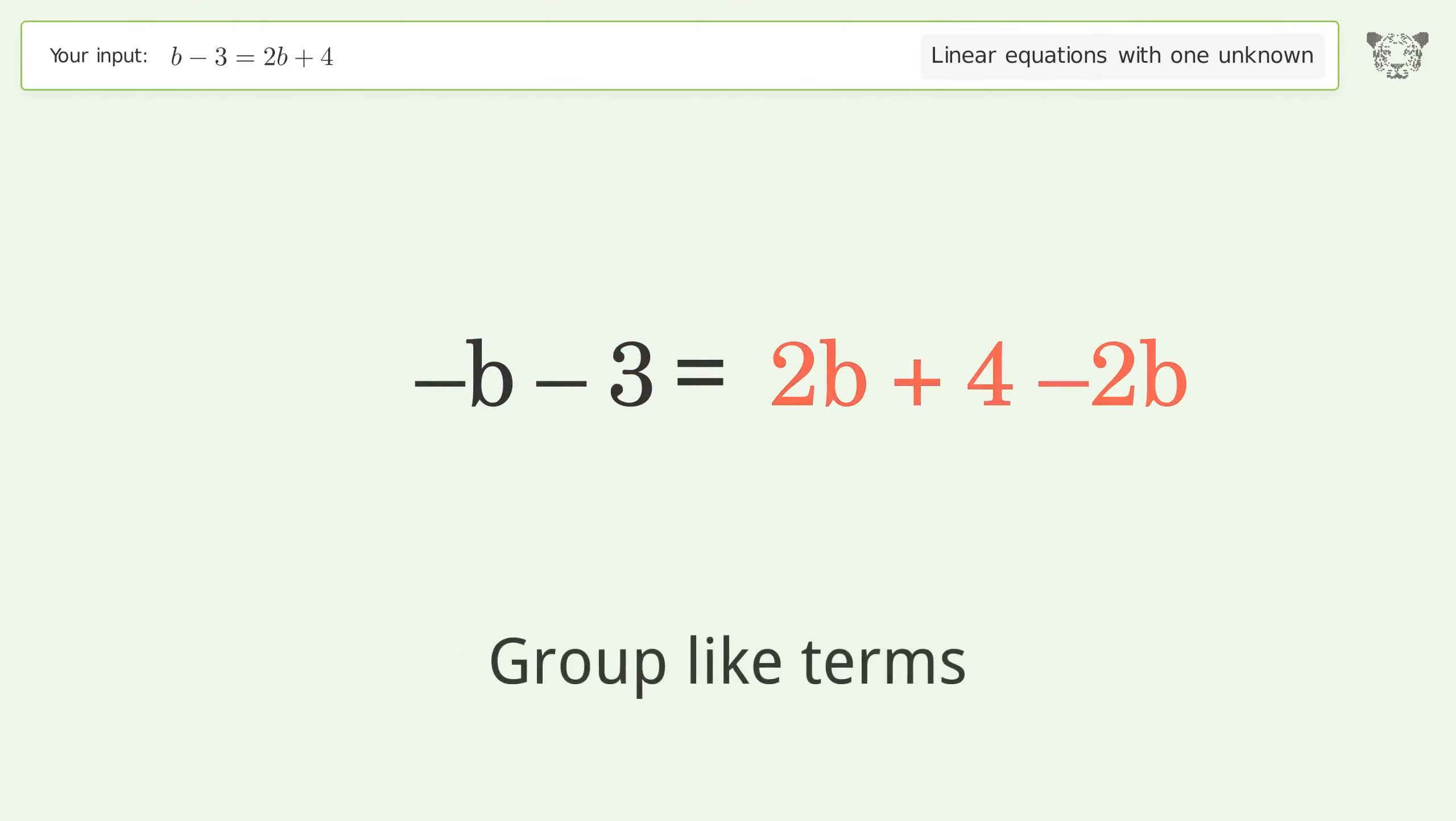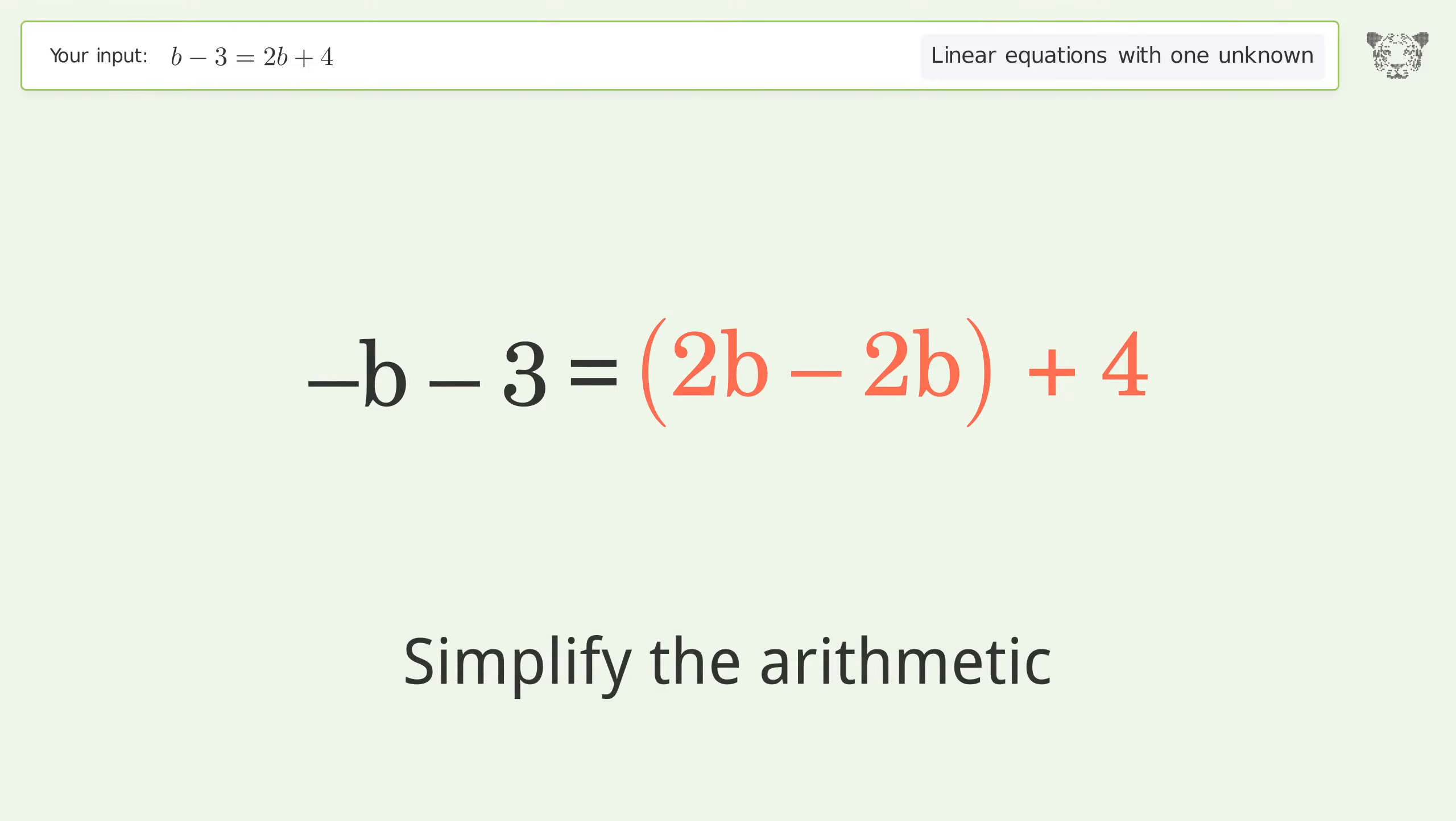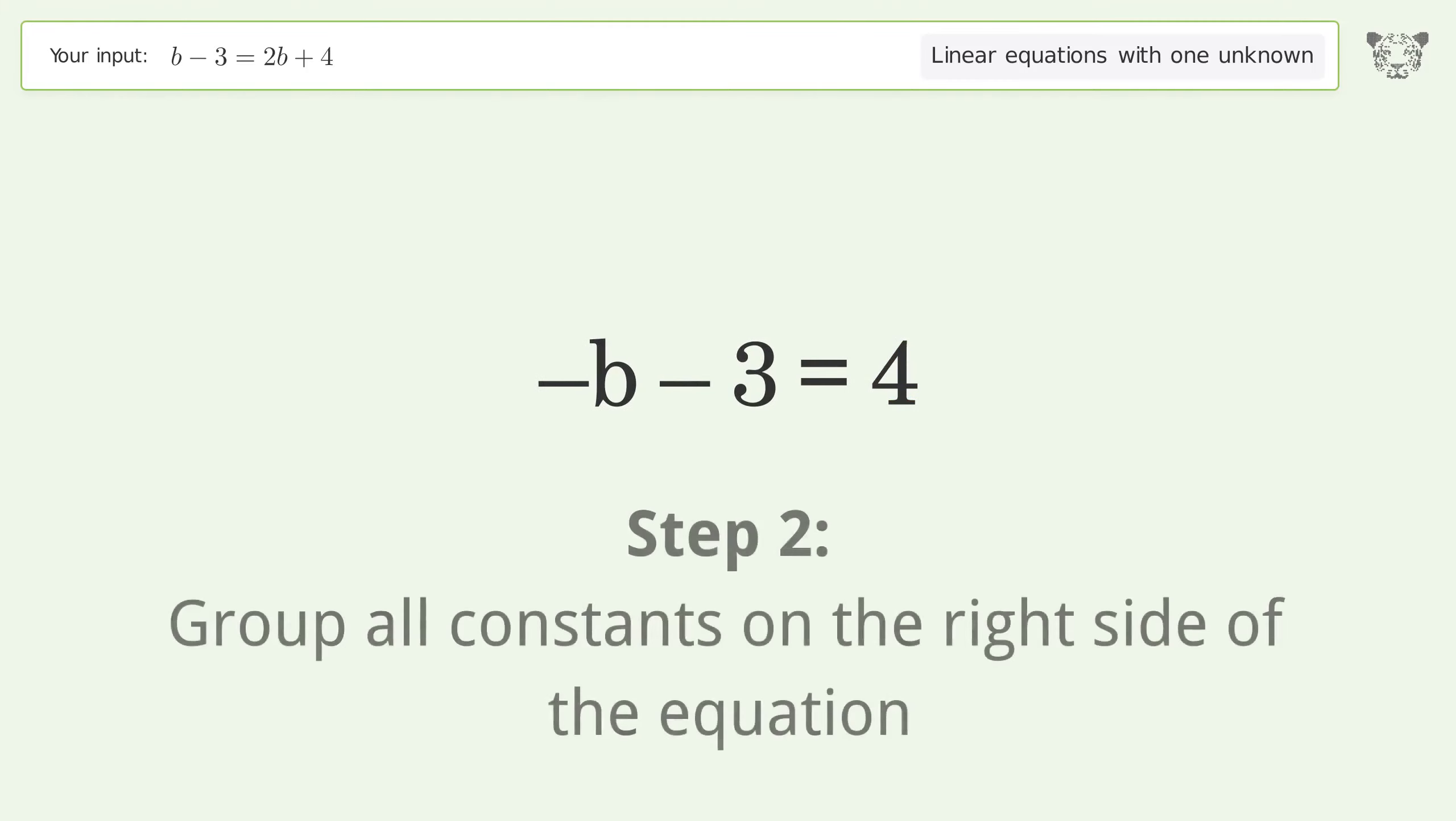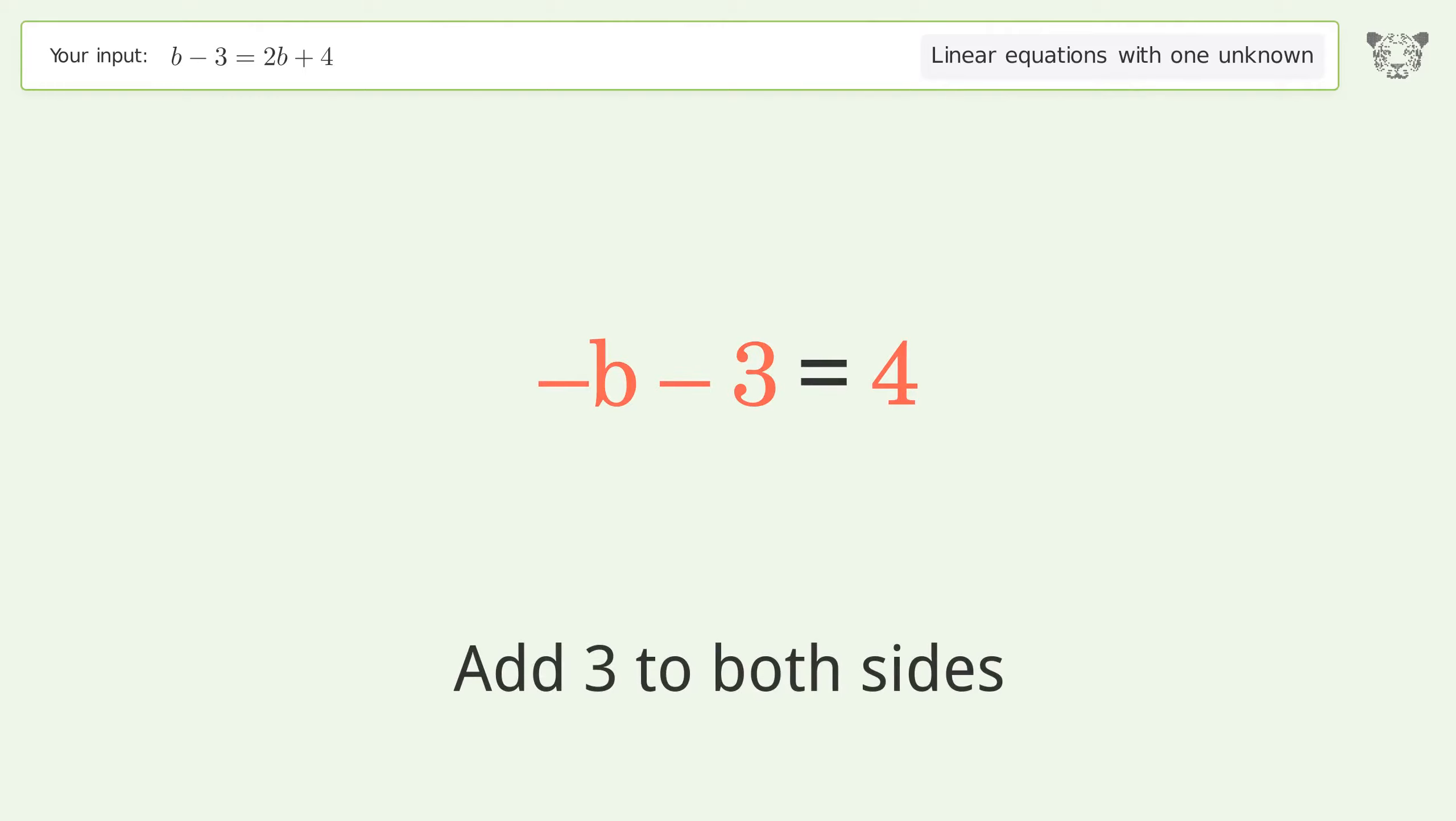Group like terms. Simplify the arithmetic. Group all constants on the right side of the equation. Add 3 to both sides. Simplify the arithmetic.